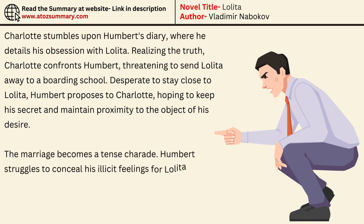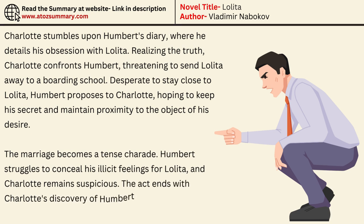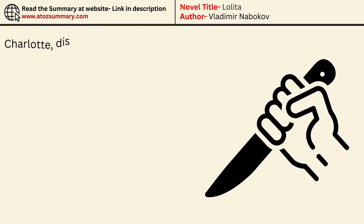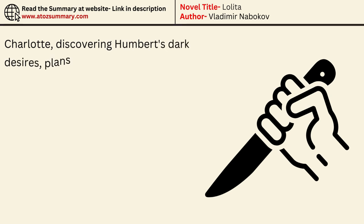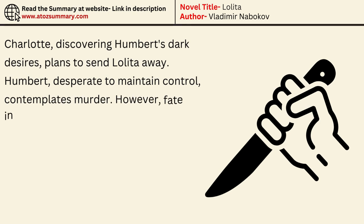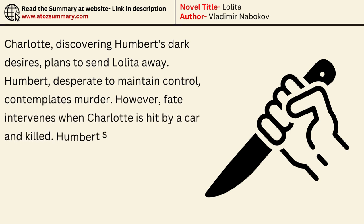Humbert struggles to conceal his illicit feelings for Lolita, and Charlotte remains suspicious. The act ends with Charlotte's discovery of Humbert's diary, leading to a climactic confrontation. Charlotte, discovering Humbert's dark desires, plans to send Lolita away. Humbert, desperate to maintain control, contemplates murder.